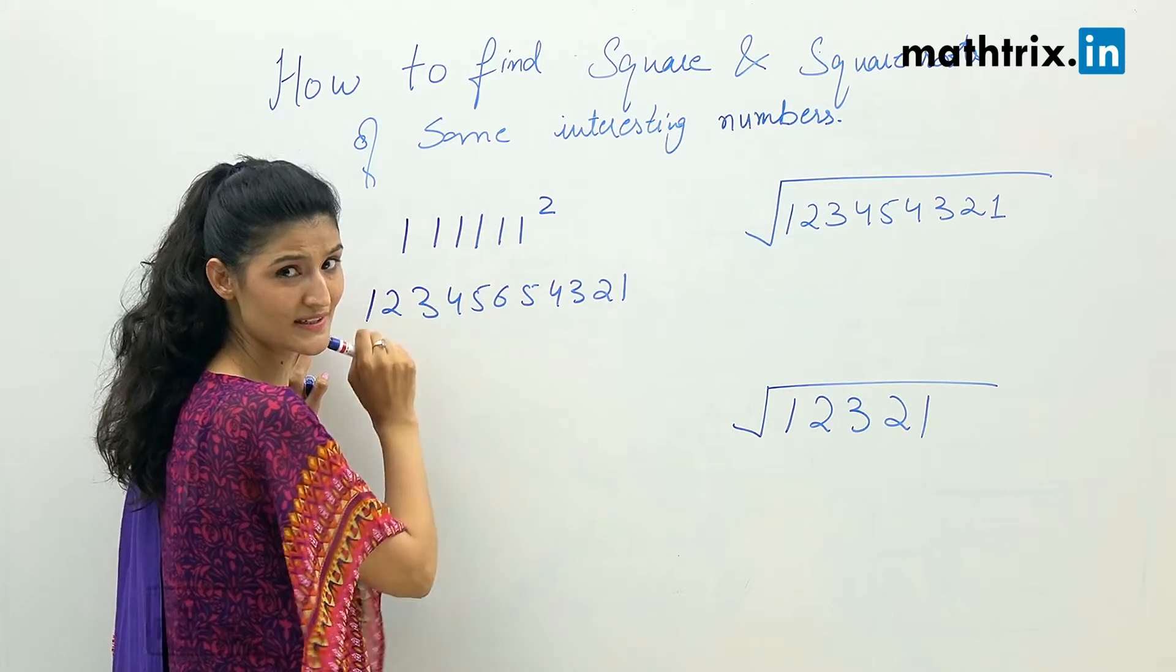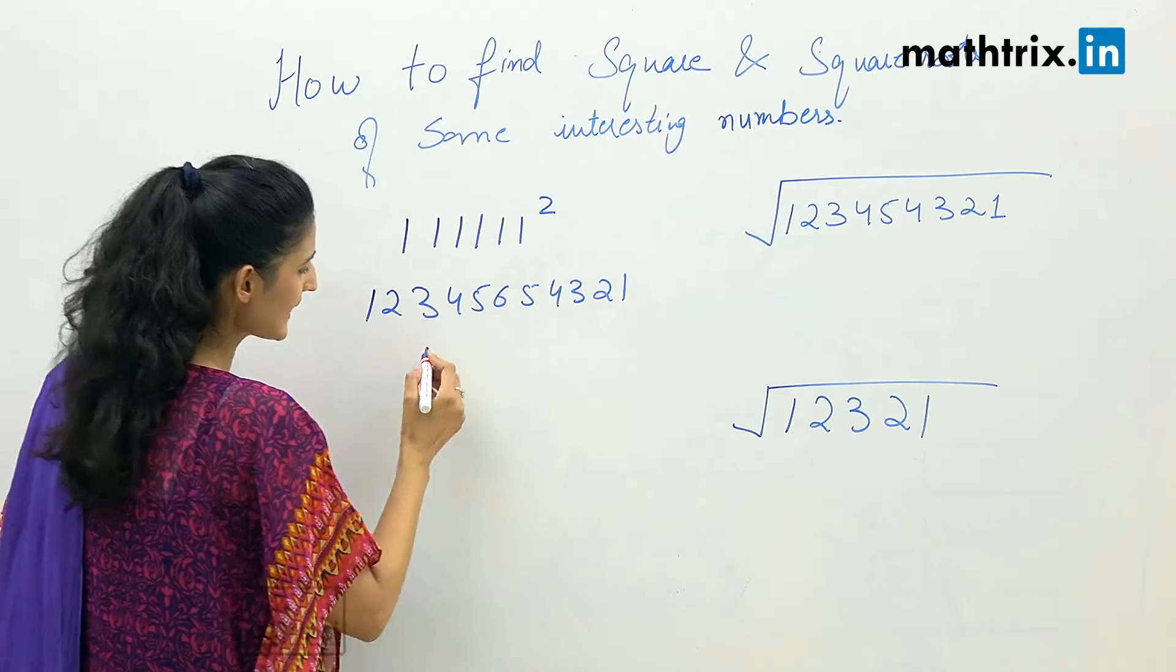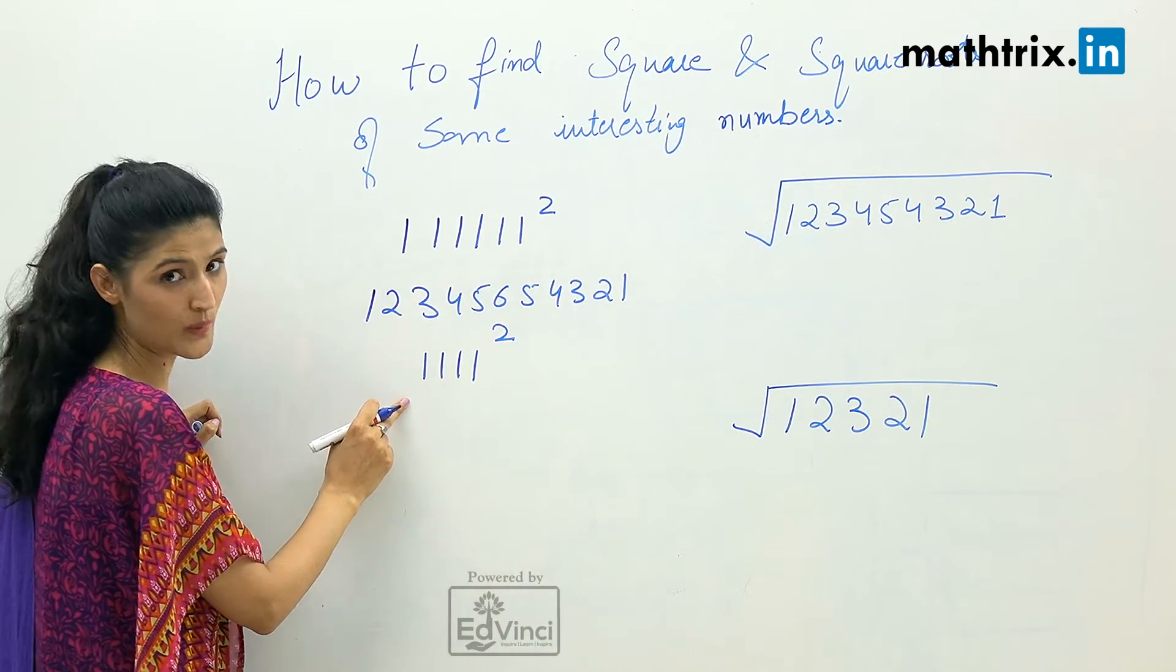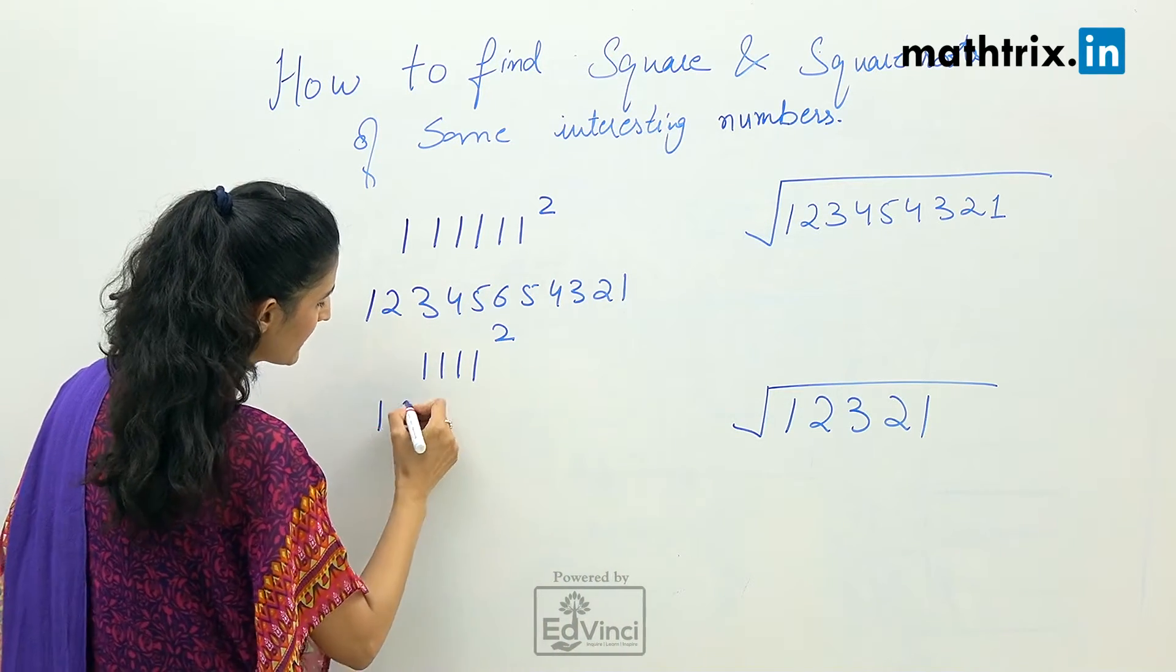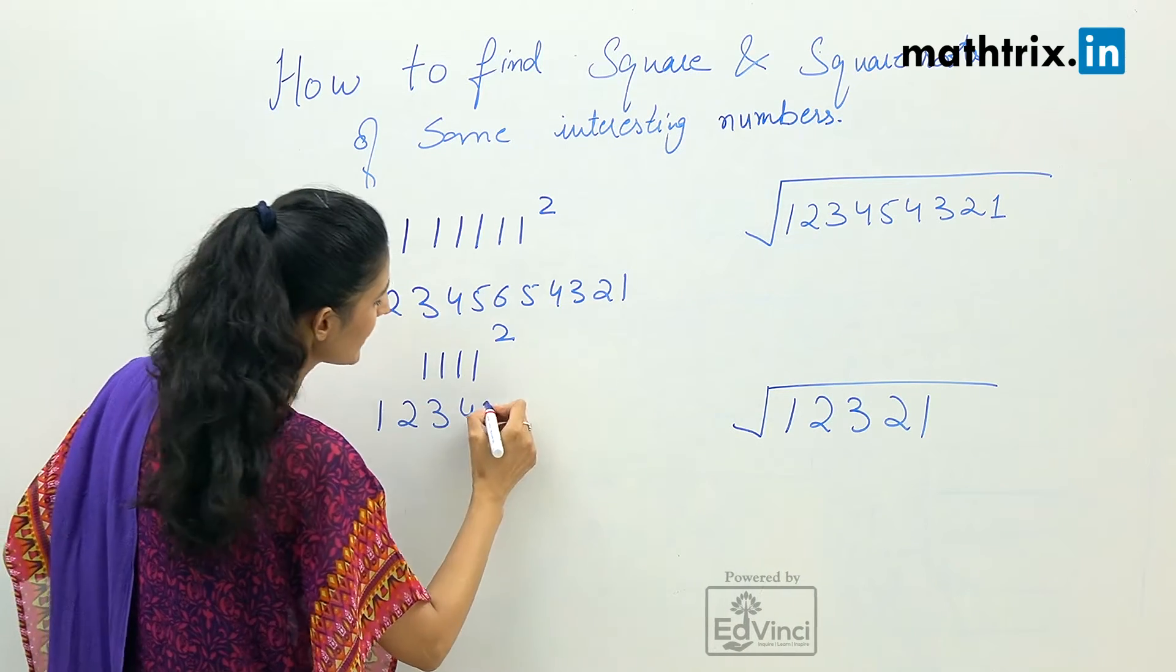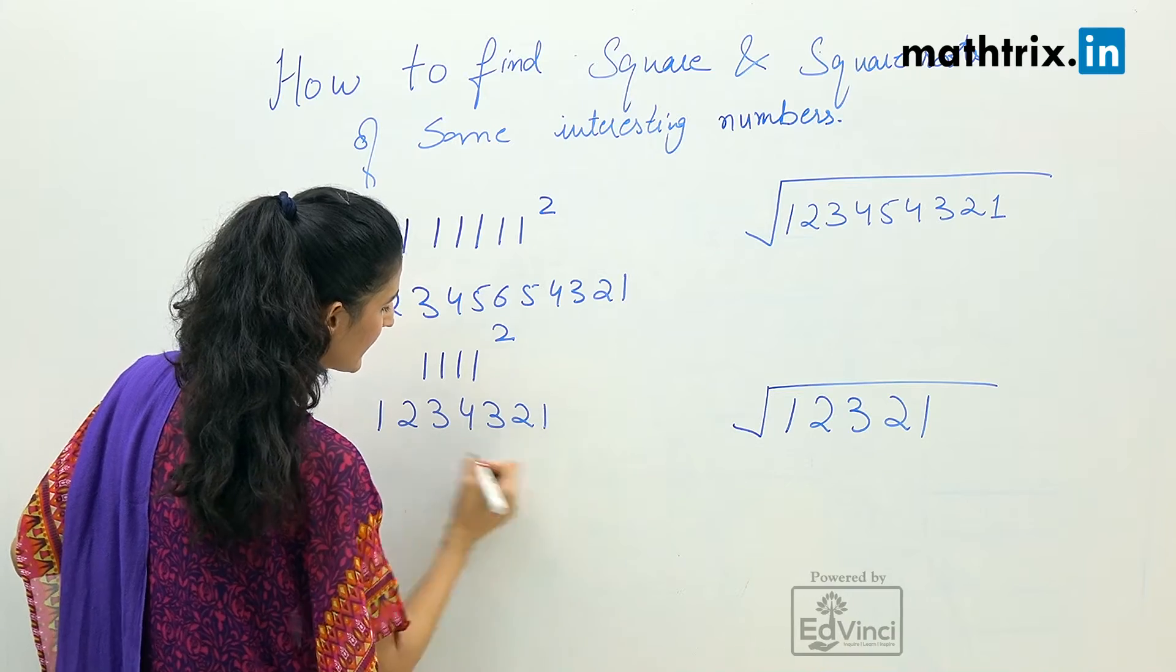So one, two, three, four, five, six, five, four, three, two, one. Isn't it simple? Now let's take another example. Let's say 1111 squared. So we have four ones.